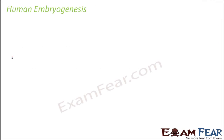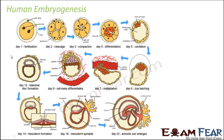Let us have a quick look at human embryogenesis step by step. Starting from day one, fertilization takes place — that is, fusion between sperm and egg — forming the zygote, represented here by an orange colored structure. This is just one single cell. On day two, the very next day, cell division has occurred and one cell has given rise to many cells.